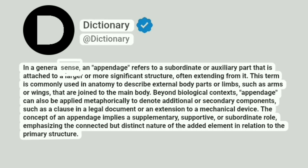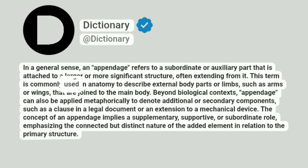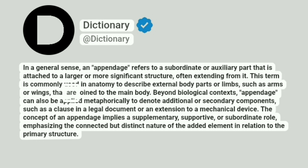In a general sense, an appendage refers to a subordinate or auxiliary part that is attached to a larger or more significant structure, often extending from it. This term is commonly used in anatomy to describe external body parts or limbs, such as arms or wings, that are joined to the main body.